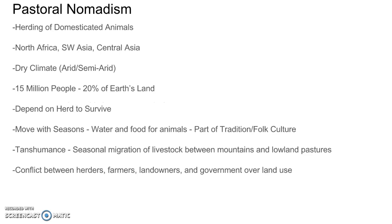Next, let's talk about pastoral nomadism. Nomad means moving around, and pastoral means animals, so this is the herding of domesticated animals. It's mainly practiced in North Africa, Southwest Asia, and Central Asia — in arid and semi-arid climate zones. The issue is that it's sustaining only 15 million people while taking up 20% of the Earth's land. These people depend on their herd to survive, typically moving with the seasons to wherever they can find food and water for their animals.